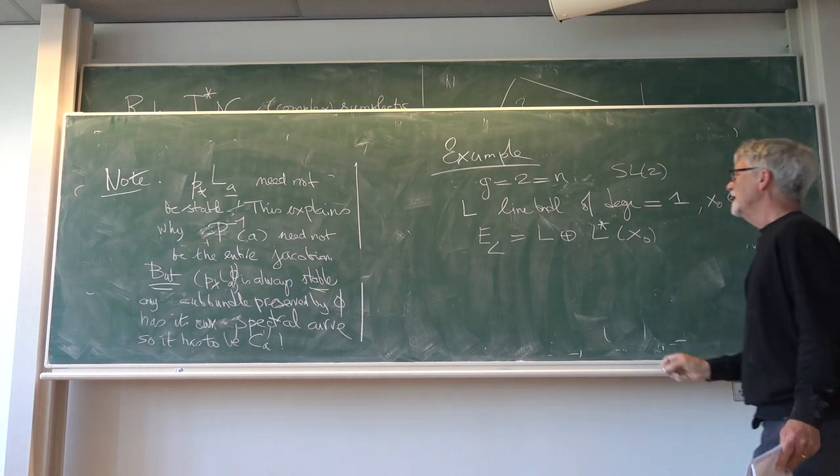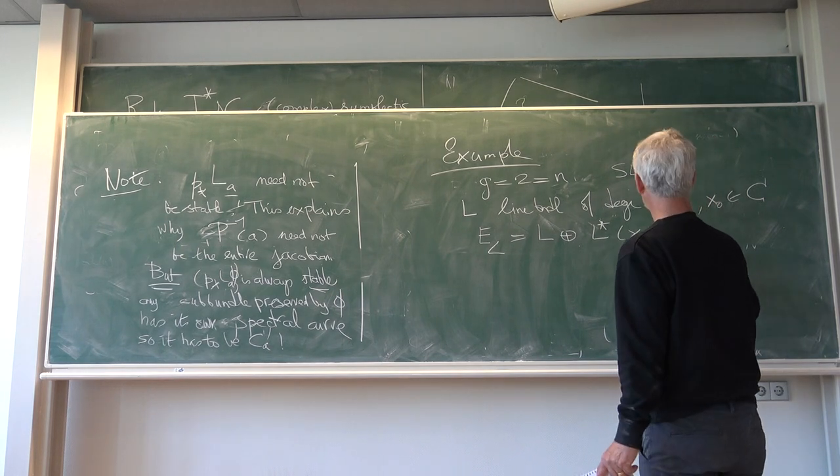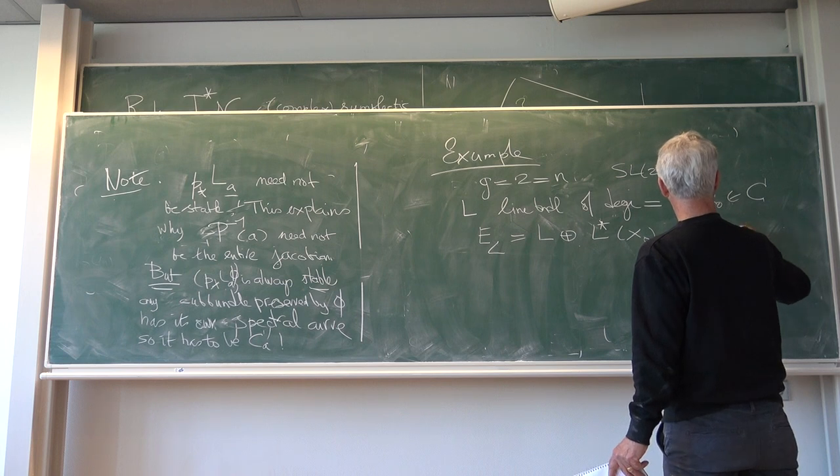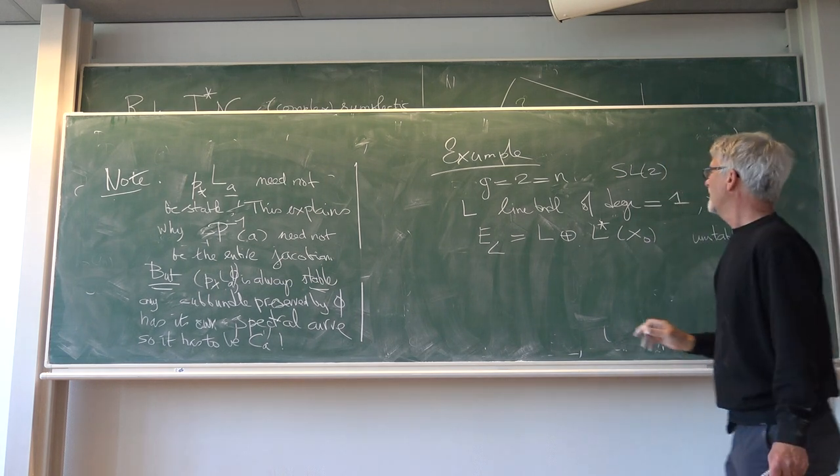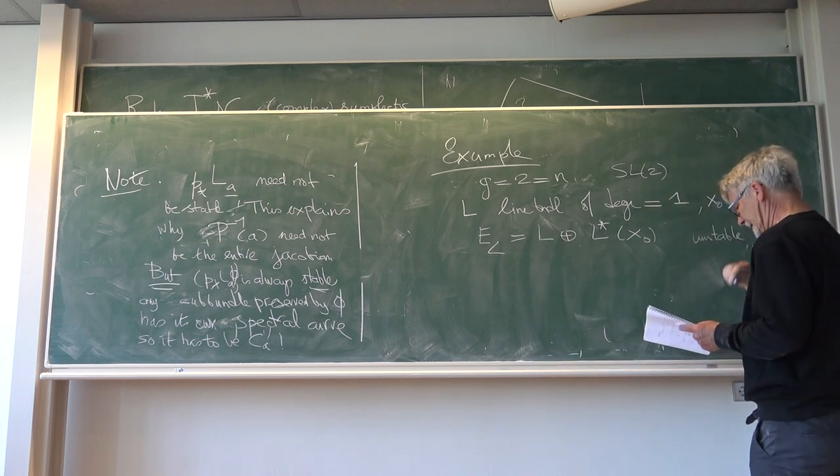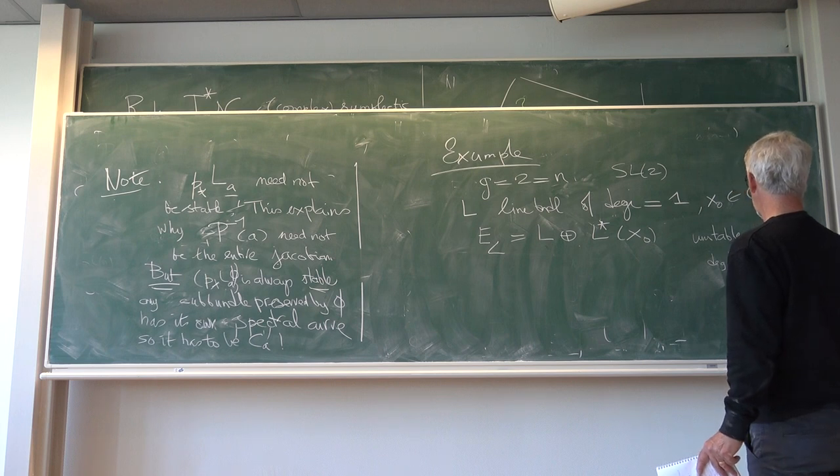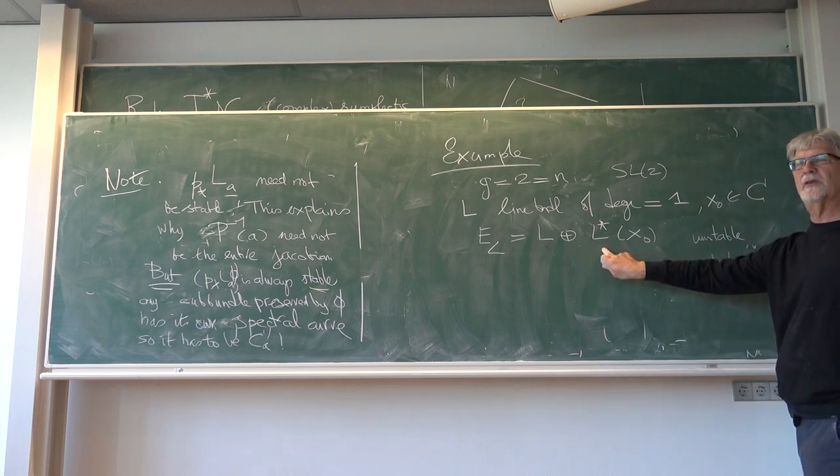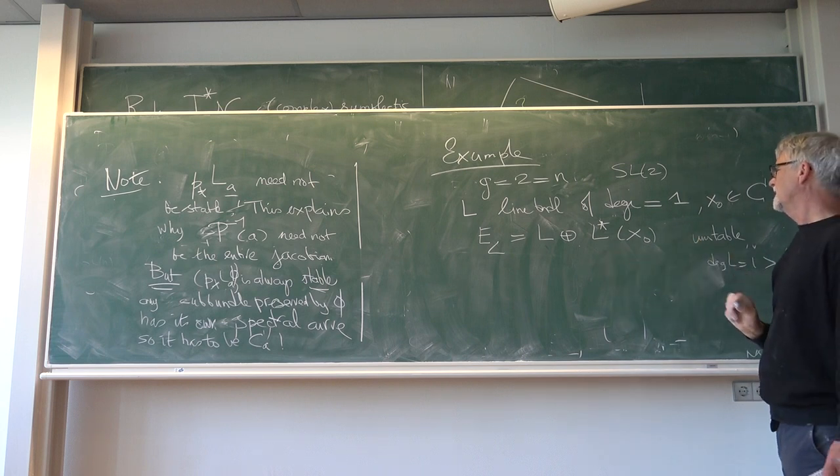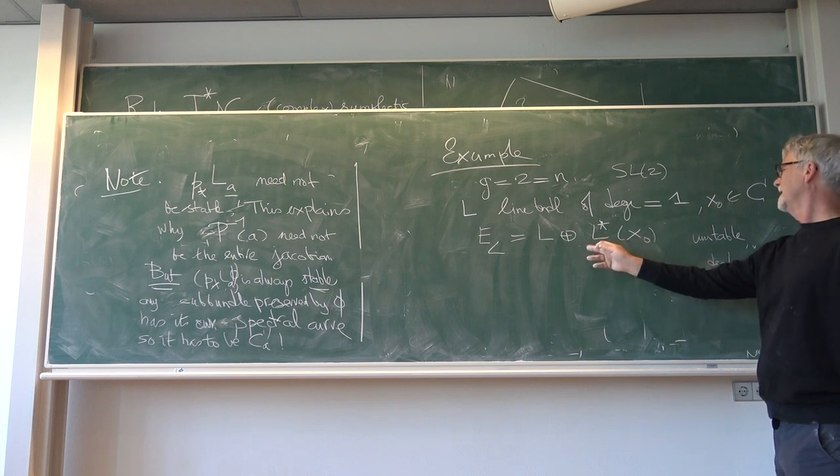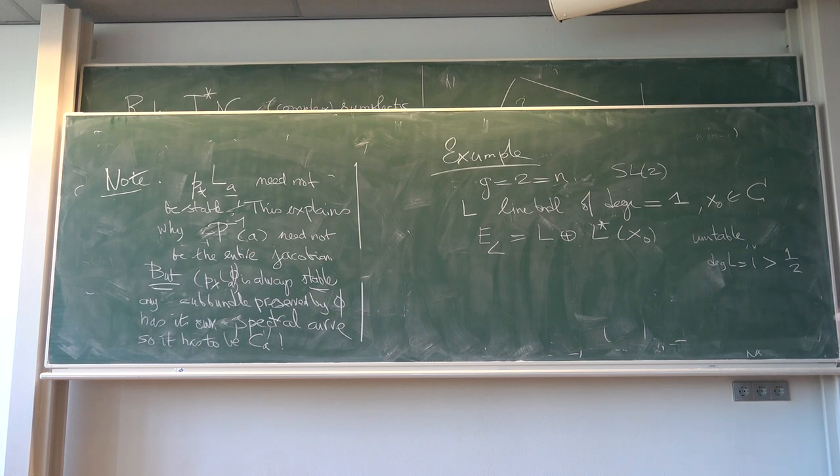Now, this vector bundle is unstable. And because the degree is 1, and it is bigger than 1 half, because the determinant is 1, and the determinant has rank 1. And you have to divide this by the rank, so it's bigger than 1 half, so it's unstable.